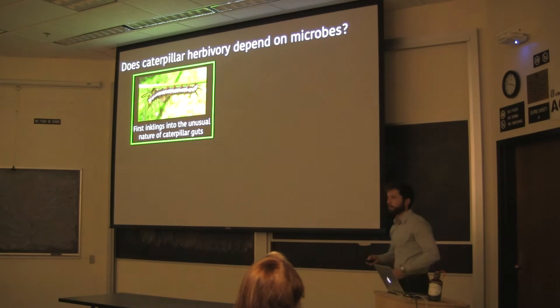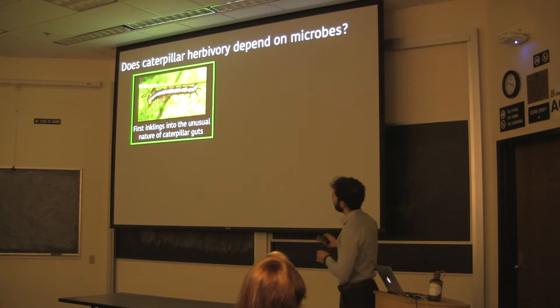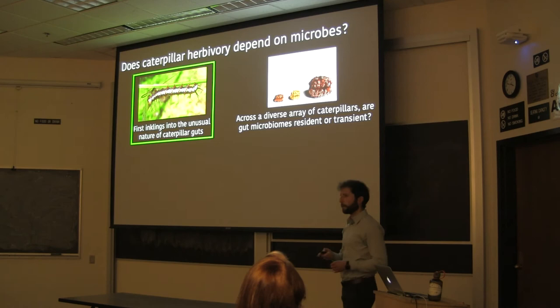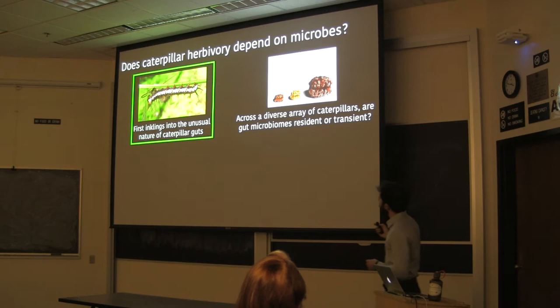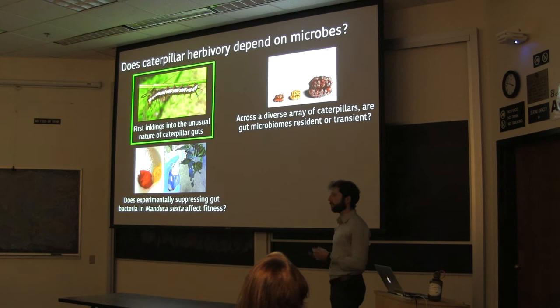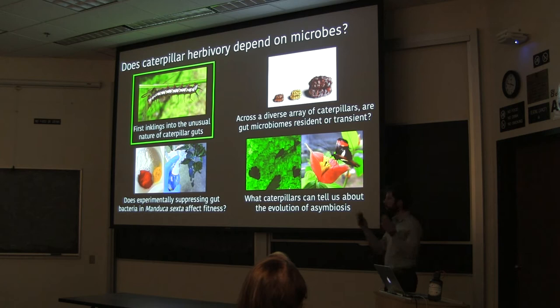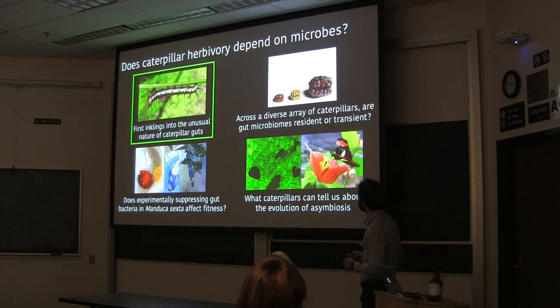Here's a brief outline of the rest of the talk. I'll begin by telling a story about the first inklings I had that something unusual was going on in caterpillar guts — that maybe humans and termites weren't a good model for caterpillars. Then I'll talk about two studies I conducted: the first asking whether caterpillar gut microbiomes are resident or transient, and the second presenting an experiment manipulating gut microbes in tobacco hornworms.